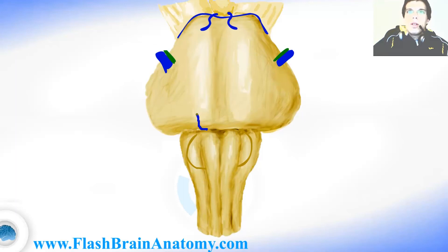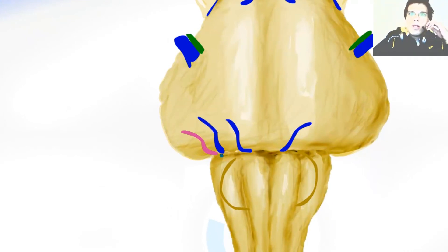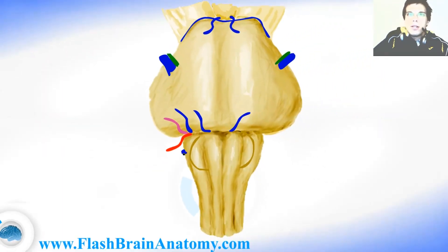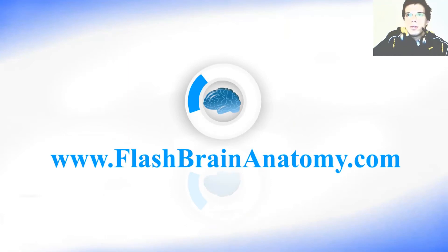From this border we have the abducens coming out. Then we have the facial nerve, the vestibulocochlear nerve, and the glossopharyngeal nerve. The 10th cranial nerve is here and it is called the vagus — and the same on the other side. More caudal from the vagus, we have the accessory nerve.